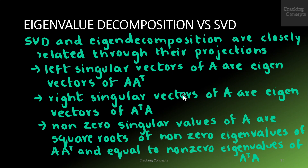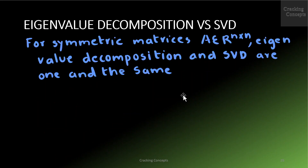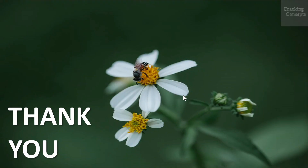The SVD and eigendecomposition are closely related through their projections. The left singular vectors of A are eigenvectors of AA^T. The right singular vectors of A are eigenvectors of A^T A, and the singular values are the square roots of the non-zero eigenvalues of AA^T, which equal the non-zero eigenvalues of A^T A. For symmetric matrices A in N×N dimension space, the eigenvalue decomposition and the SVD are one and the same, which follows from the spectral theorem. That's all for now. Thank you for watching.